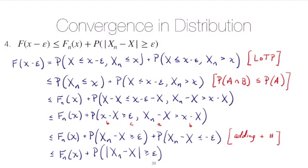So we've now proved the result in part four. In class, we put all four results together to show that convergence in probability implies convergence in distribution.